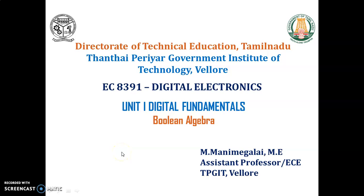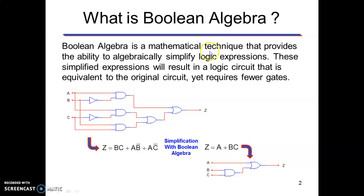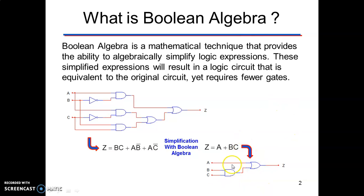Welcome to the video lecture on Boolean Algebra. Boolean Algebra can be used to simplify the design of logic circuits. It is a mathematical technique that provides the ability to algebraically simplify logical expressions. This expression is dynamically expressed using logic gates — for example, it may require 7 logic gates. When simplified using Boolean Algebra, the same expression results in only 2 gates, producing an equivalent circuit. So the number of gates can be reduced by using Boolean Algebra.